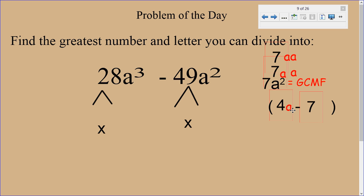So this stuff that I put inside of the parenthesis is what was left. And so now I have what's left, and I also have what I'm going to put on the outside is my GCMF, which was the 7 A squared. Because when I multiply 7 A squared times what was left, 4 A minus 7, I'm going to come back to 28 A to the third minus 49 A to the second.